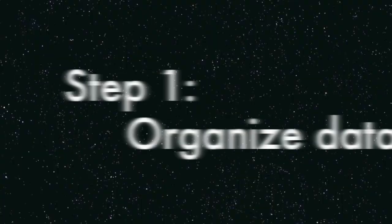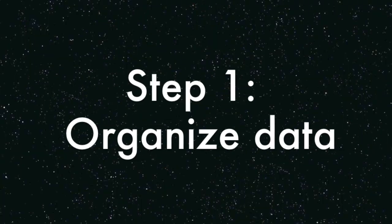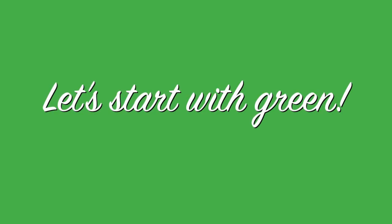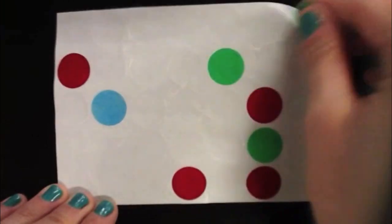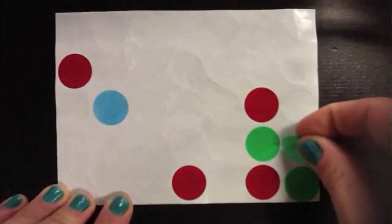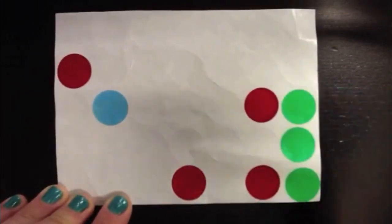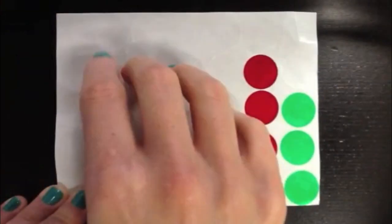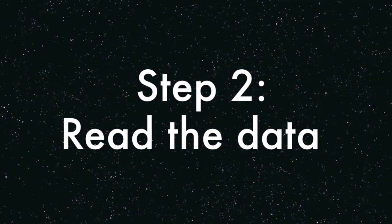Step one is organizing the data. Let's organize the data from my sticker collection. Let's start with the green stickers — I'll put them all in one line so that they're easy to count. Now let's organize our red stickers and line them right up next to our green stickers. Last, let's organize our blue sticker in line with the rest of the dots. After we organize our data, we put it in a chart.